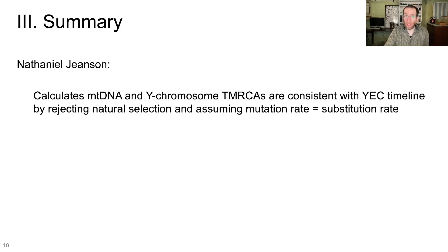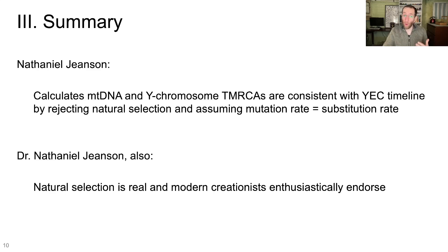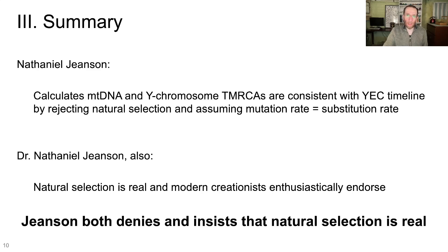So in summary, Dr. Nathaniel Jensen calculates mitochondrial DNA and Y-chromosome time to most recent common ancestors that are consistent with the Young Earth timeline by rejecting natural selection and assuming the mutation rate equals the substitution rate. Dr. Nathaniel Jensen also says that natural selection is real and that modern creationists enthusiastically endorse natural selection as a real thing. He is correct about that. But what he's doing here is both denying that natural selection is real and insisting that natural selection is real at the same time. That is a contradiction inherent to Dr. Jensen's work as a Young Earth creation scientist. Natural selection is fake and not actually affecting things like the human genome, and also natural selection is a real thing that we could observe in nature and creationists enthusiastically endorse it.